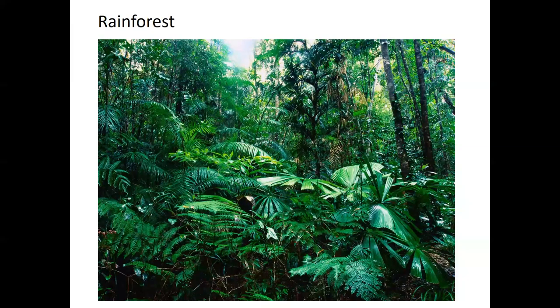Rainforests get rain pretty much 365 days a year. They have the highest biodiversity of any biome on Earth, and they are incredibly important because of this biodiversity — both plant and animal species. But the soil is very poor because the rain falls down and leaches the nutrients out. As a result, plants have to come up with some pretty creative ways to survive having all of this rain every single day of the year.